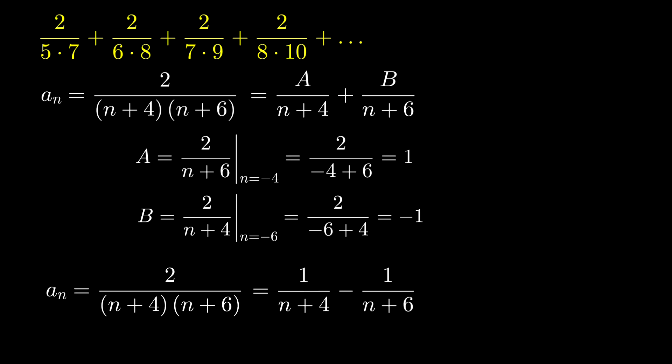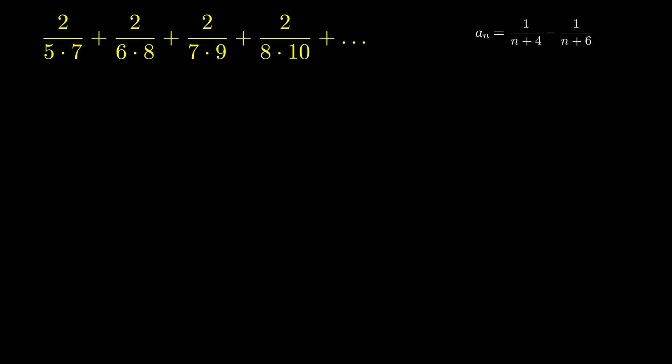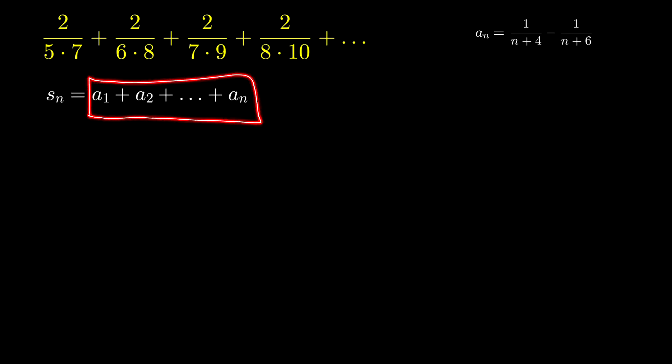Because of this difference, it seems that we have a telescoping series. So let's find a formula for the sum of the first n terms of this series. Let S sub n be equal to the sum of the first n terms of this series.